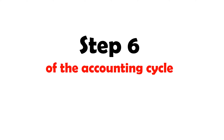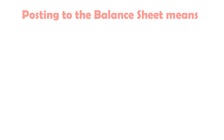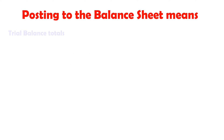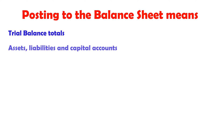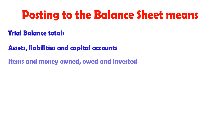Step 6 of the accounting cycle: balance sheet. Posting to the balance sheet means using trial balance totals — assets, liabilities, and capital accounts. This covers items and money owned, owed, and invested.